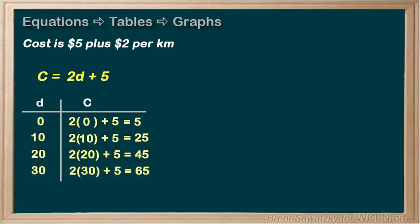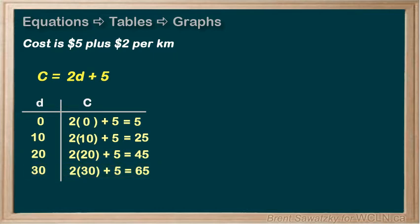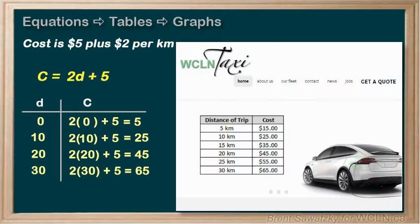That's it, we have a table. This table might be convenient for posting on a website, letting customers quickly look up their estimated price. For example, if you knew you had to get to a location 20 kilometers away, you could quickly look it up on the table, and know that your trip would be about $45, and that would be quite handy.